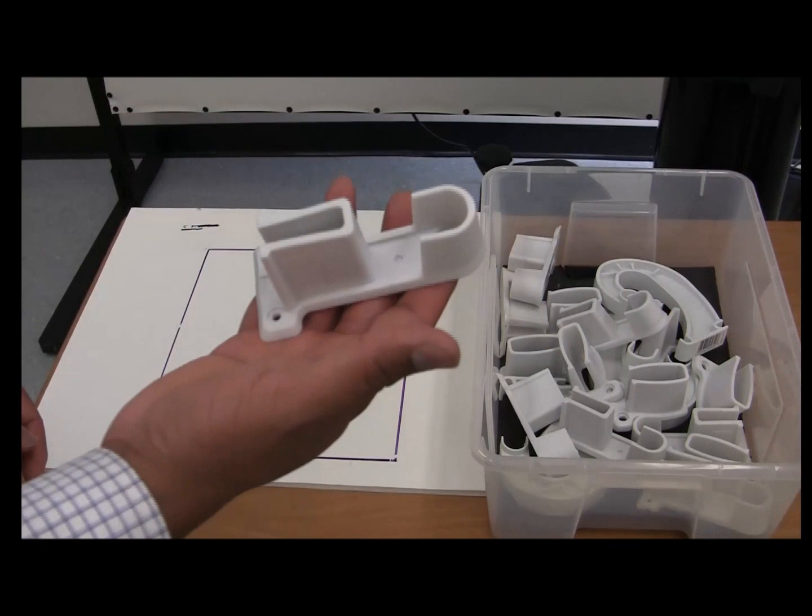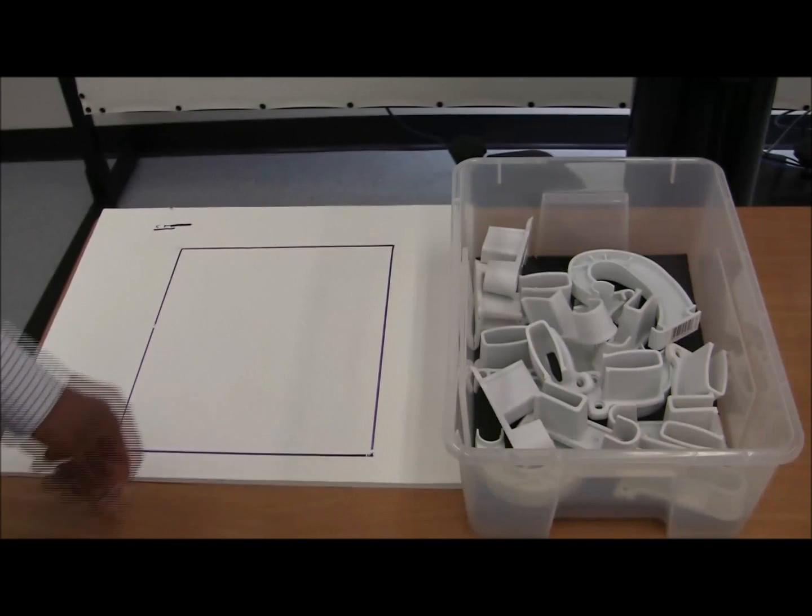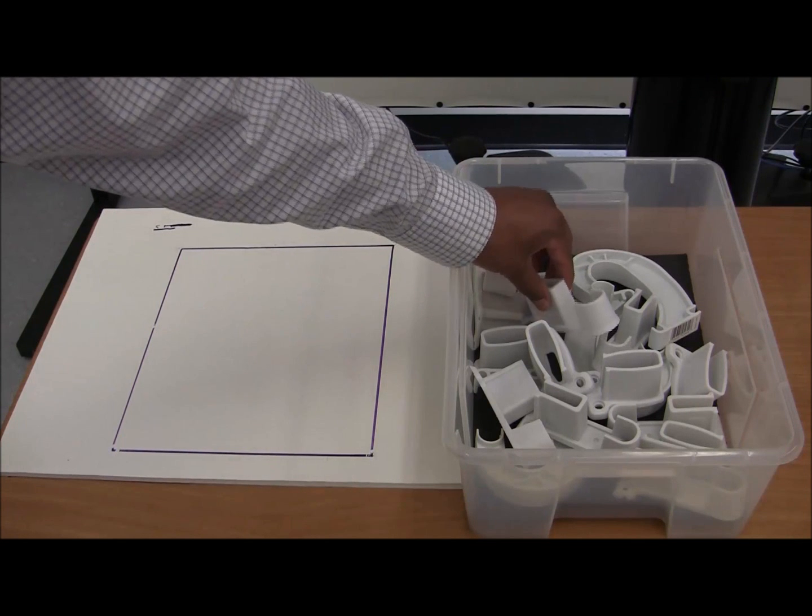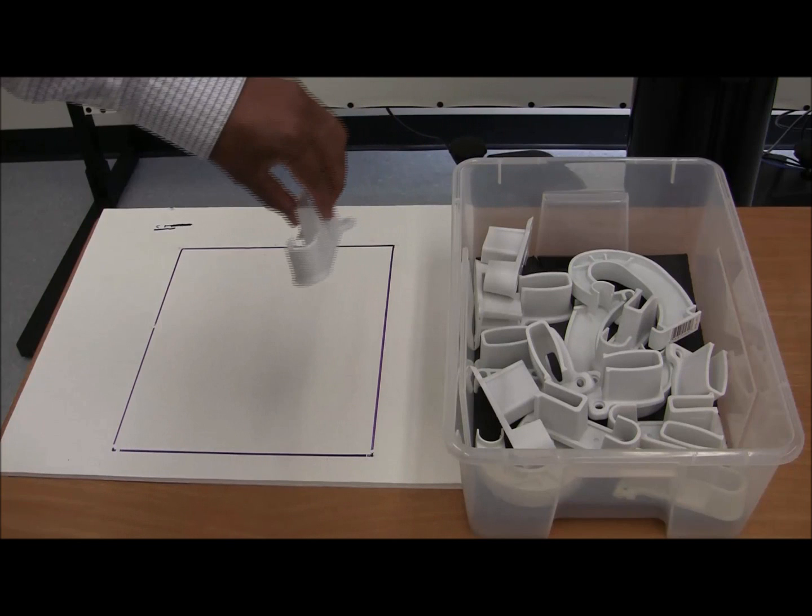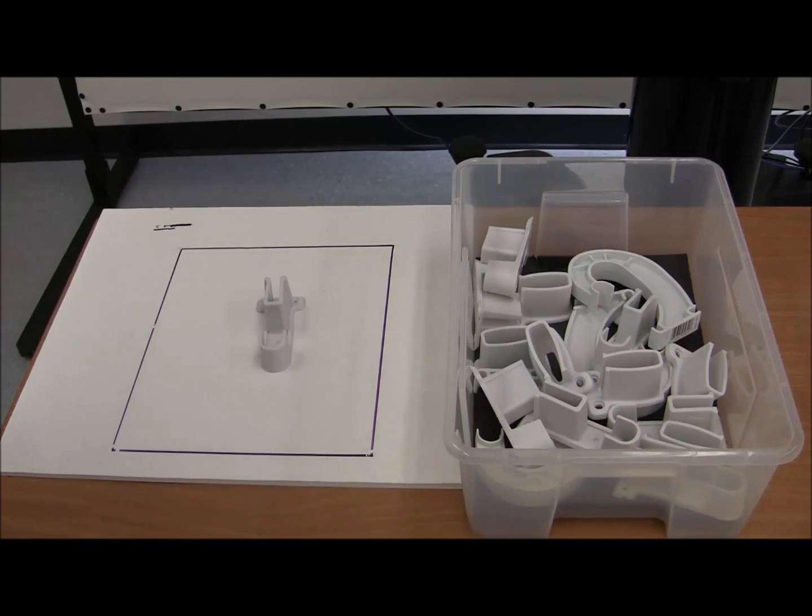Imagine a task where a robot needs to pick this part from the bin and place it on the table at a desired location. The robot needs to use the imaging system to find the desired part in the bin, and then generate a plan to figure out how to move its arm to get the part out. It then needs to execute the plan to finish the task.